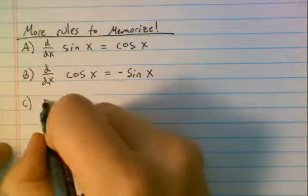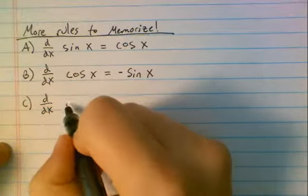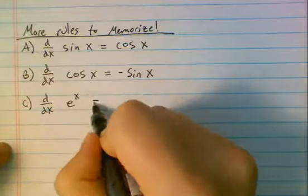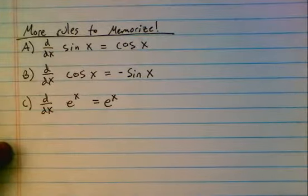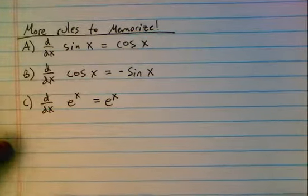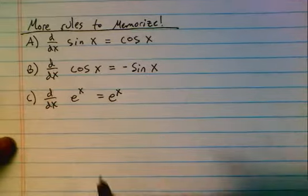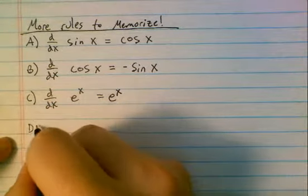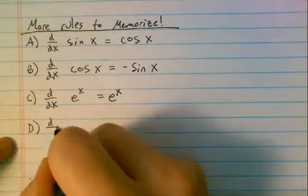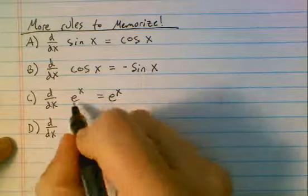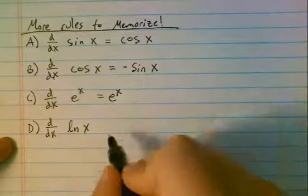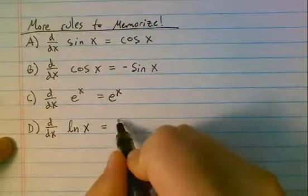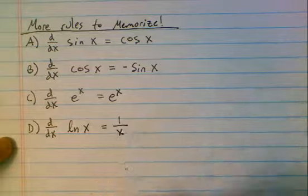First, the derivative of sine of x is the cosine of x. Second, the derivative of the cosine of x is not sine of x, but actually negative sine of x. Third, the derivative of e to the x is itself — this is why e to the x is so completely and utterly awesome. It is its own derivative — it is the only function that is its own derivative. And then the natural log of x has the interesting property that its derivative is 1 over x.